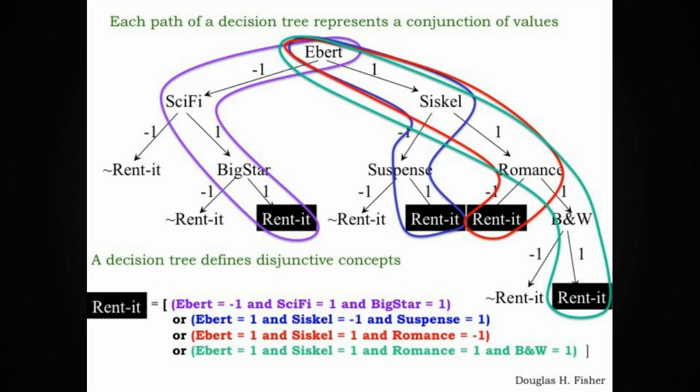Likewise for the path labeled green, which corresponds to the very last clause highlighted in green at the bottom of the screen. Ebert said yes, Siskel said yes, it was a romance, and it was black and white. That was another condition in which the model suggests that one would rent a movie.